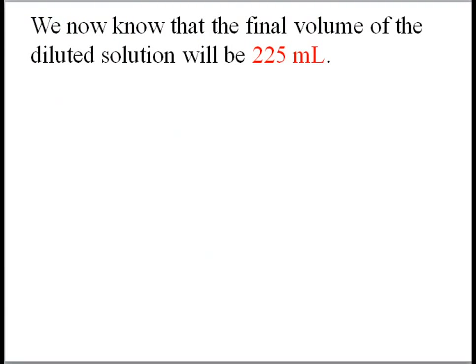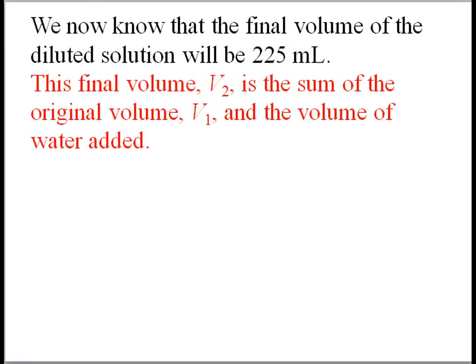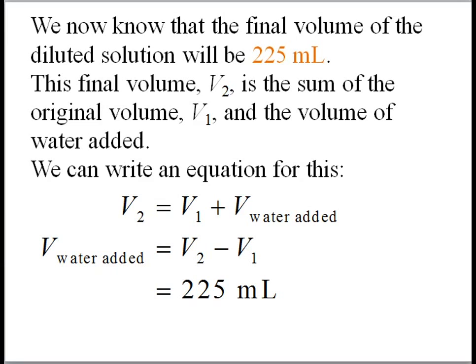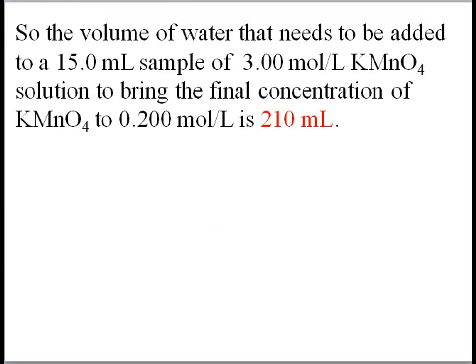We now know the final volume of the diluted solution will be 225 milliliters. This final volume V2 is the sum of the original volume V1 and the volume of water added. We write the equation: V2 equals V1 plus the volume of water added, then rearrange to solve for the volume of water added, which equals V2 minus V1 — that is 225 milliliters minus 15 milliliters — equaling 210 milliliters. So 210 milliliters of water must be added to the 15 mL sample of 3 molar KMnO4 to bring the concentration to 0.2 moles per liter.